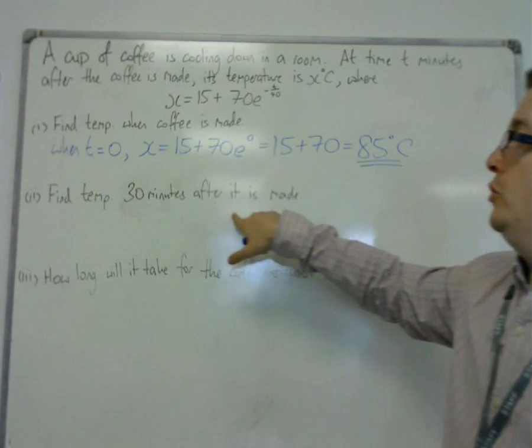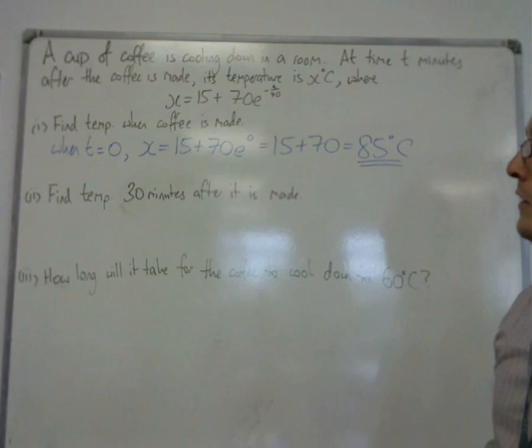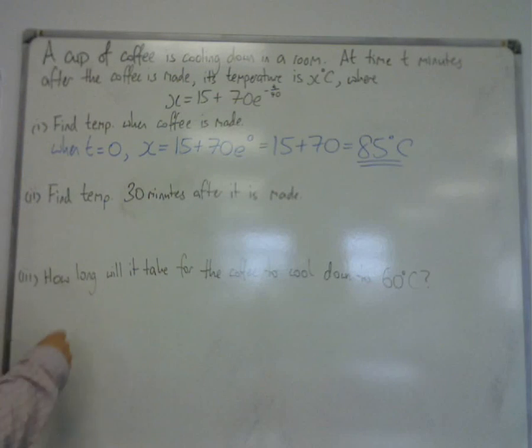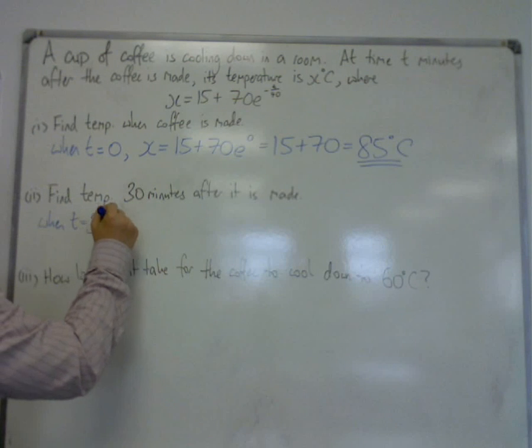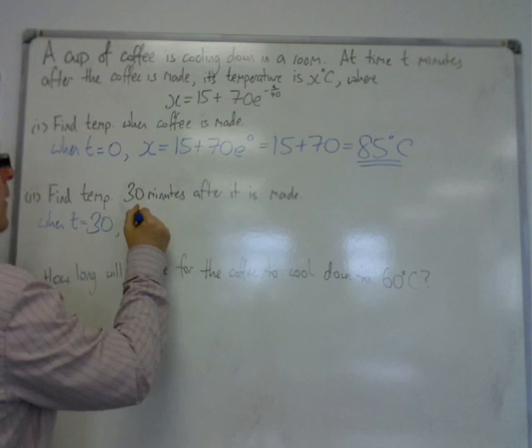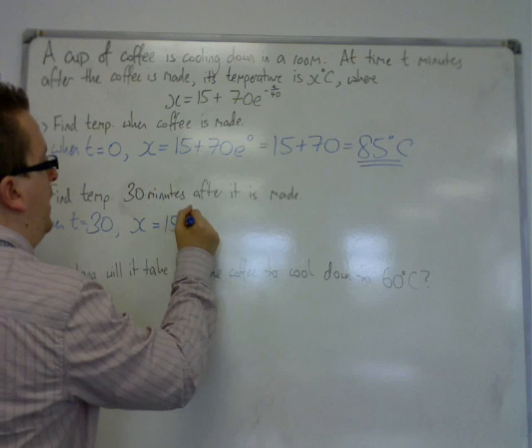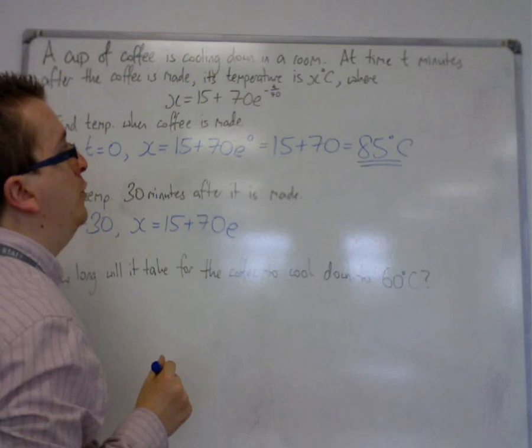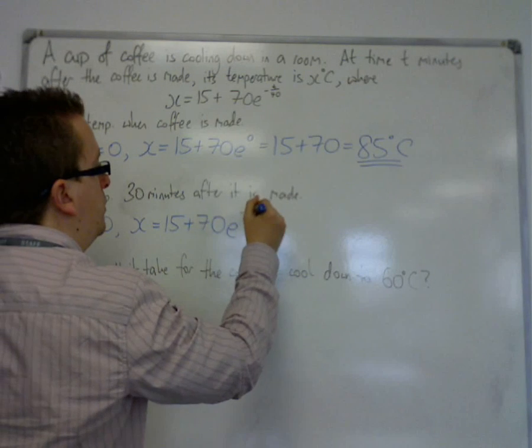Then we're asked to find the temperature 30 minutes after it is made. In this case, t is 30. So x is equal to 15 plus 70 e to the minus 30 over 40, so minus three quarters.